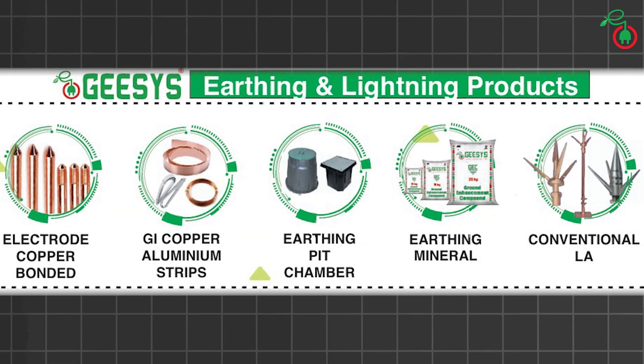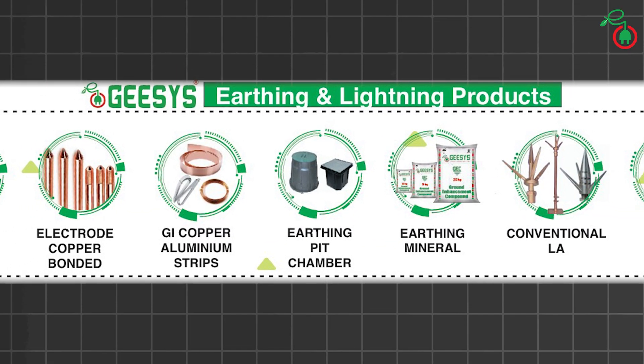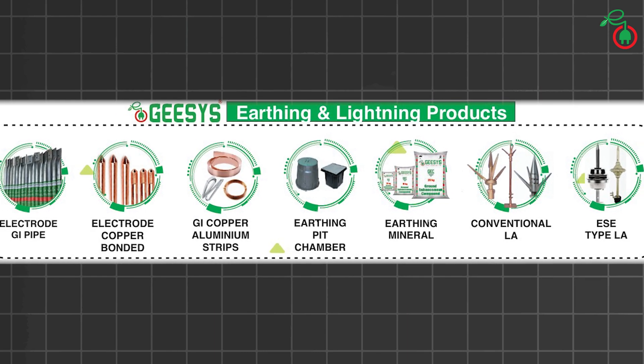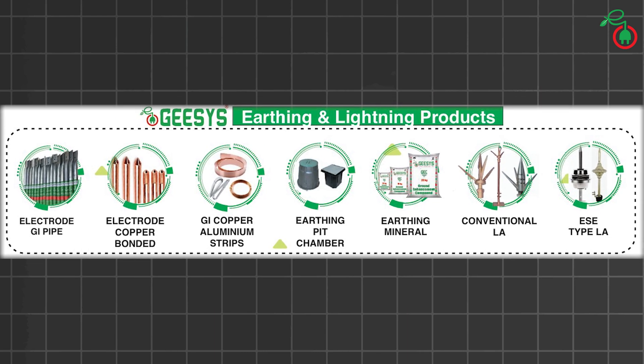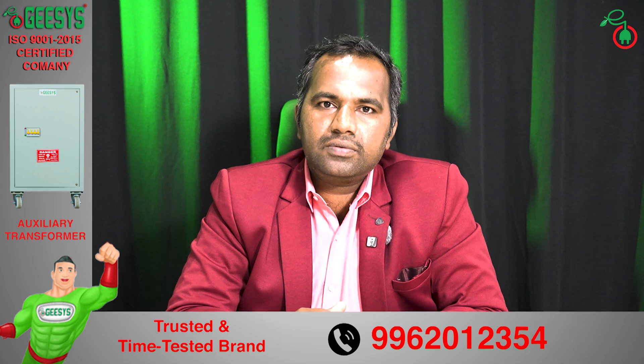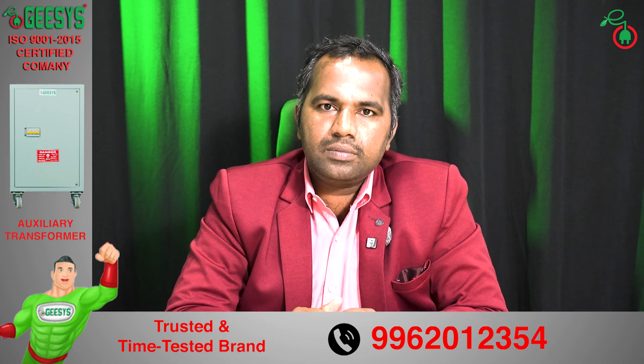The key components of a solar earthing system are: earth pit electrodes, earthing minerals, earth conductors, earth pit chambers, and other accessories. There are two key guidelines in designing the earthing system for your solar system: the first is target resistance, and the second is the number of earth pits.